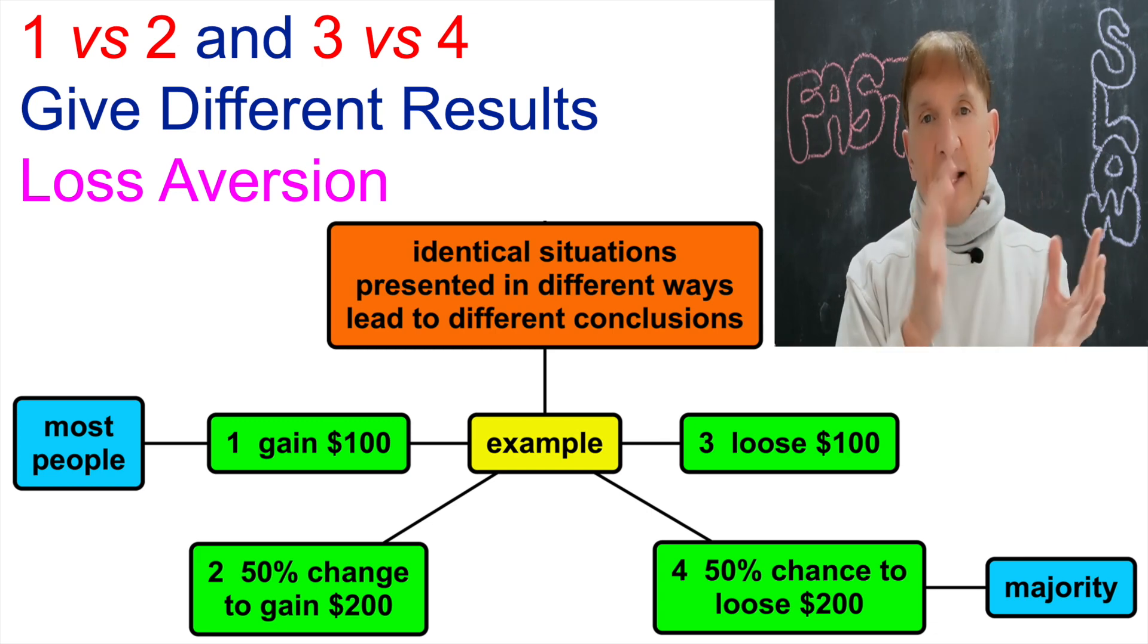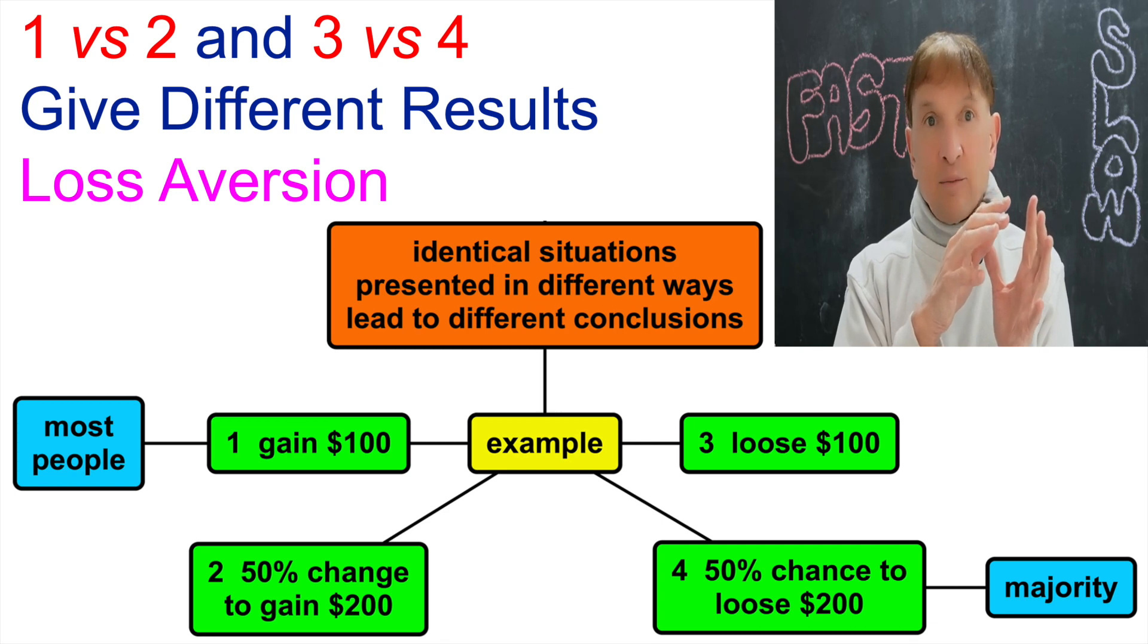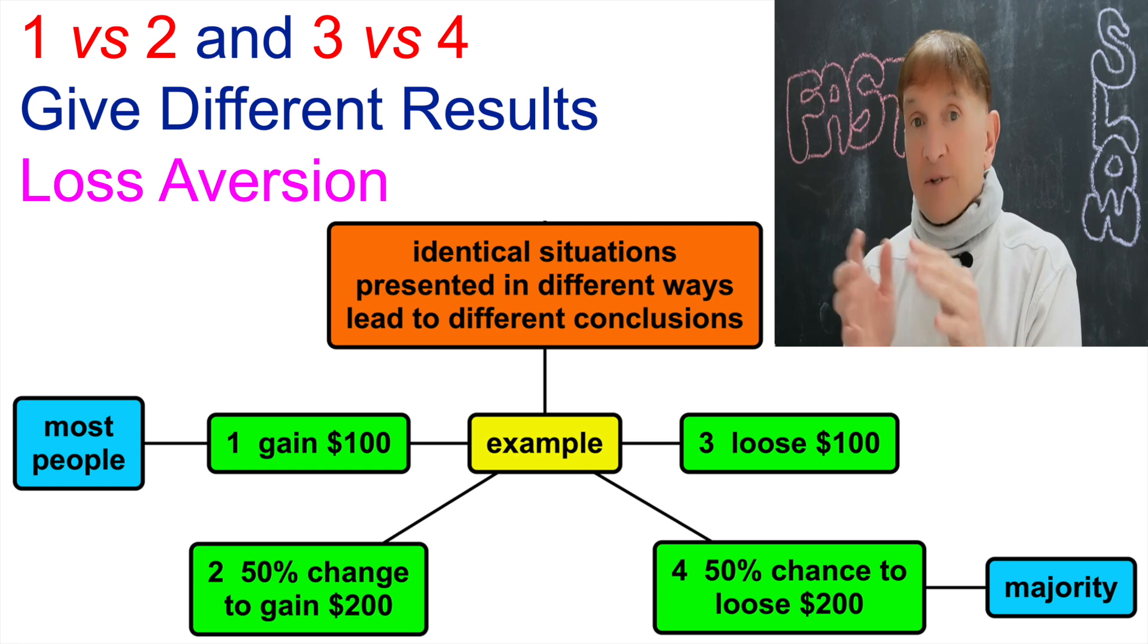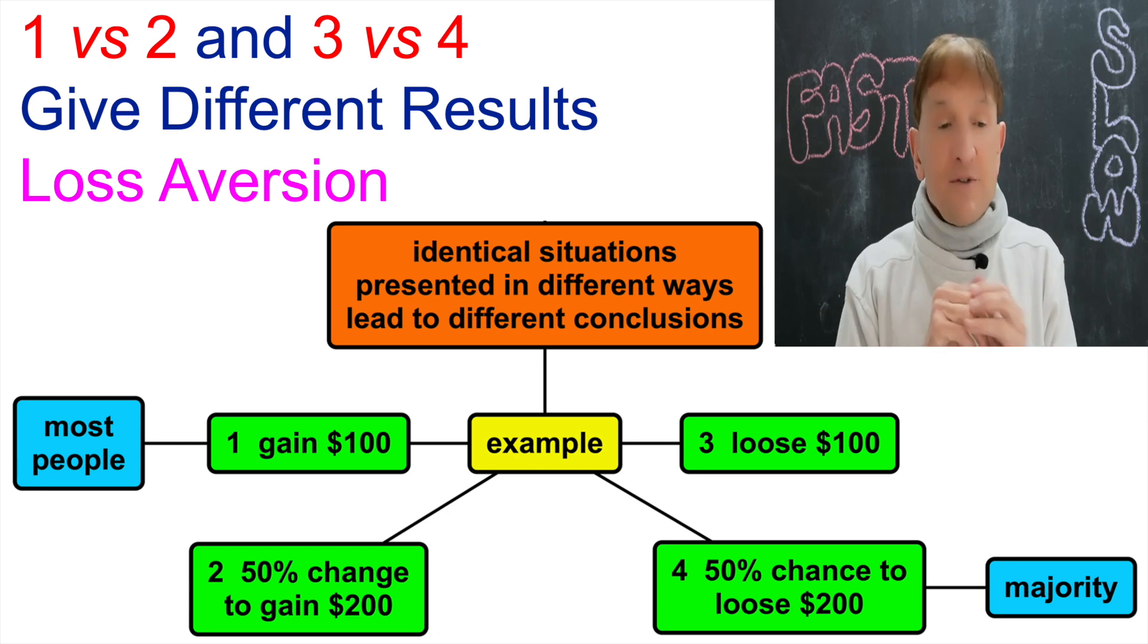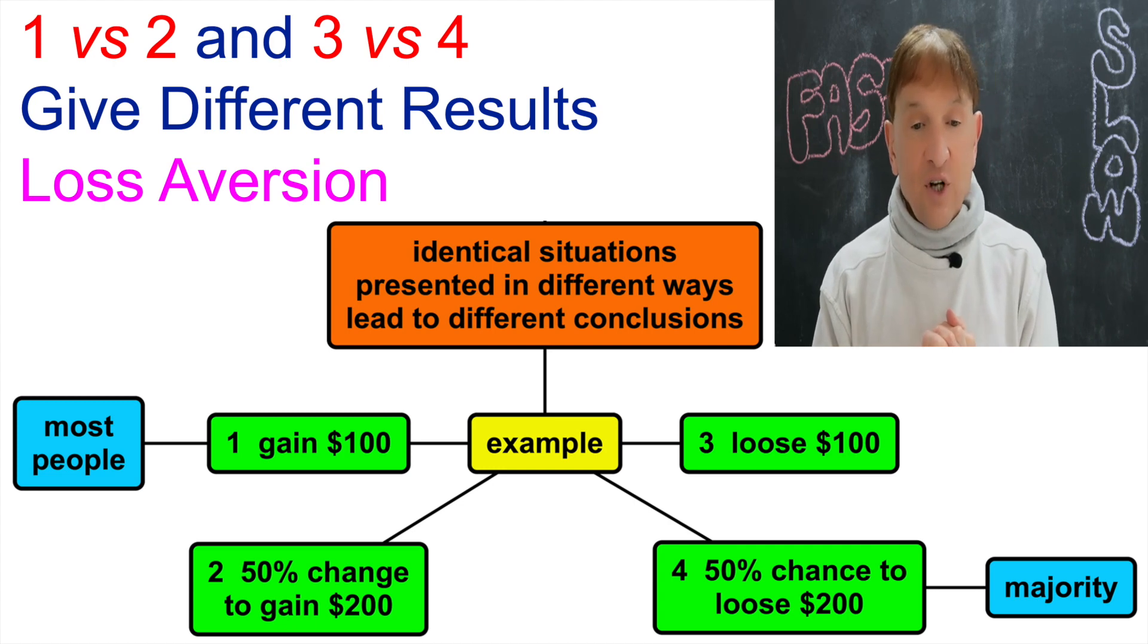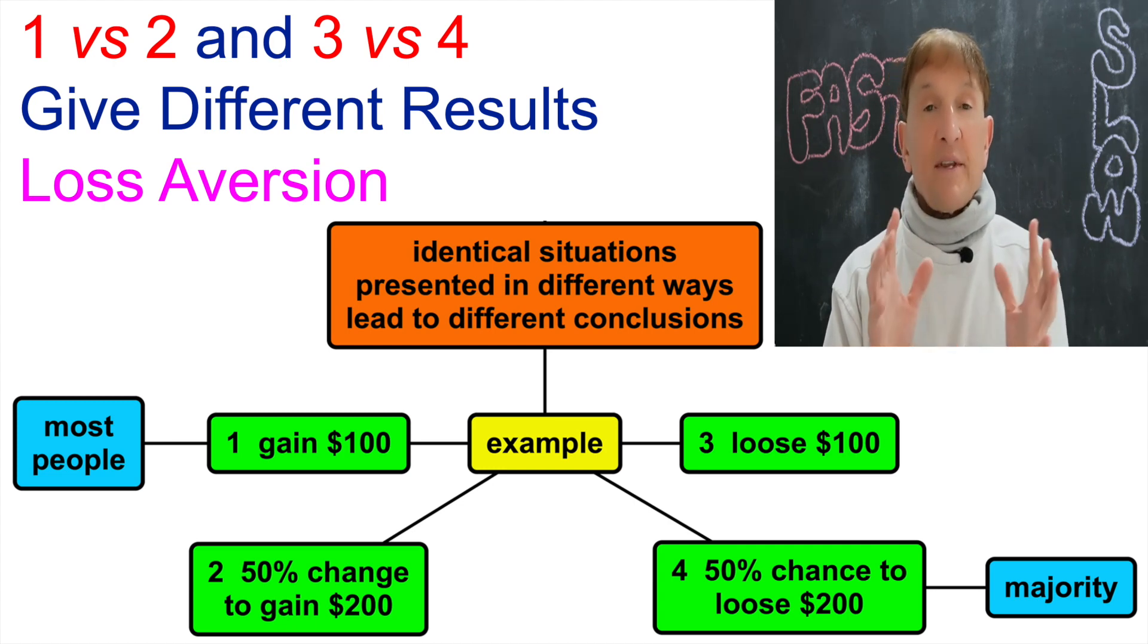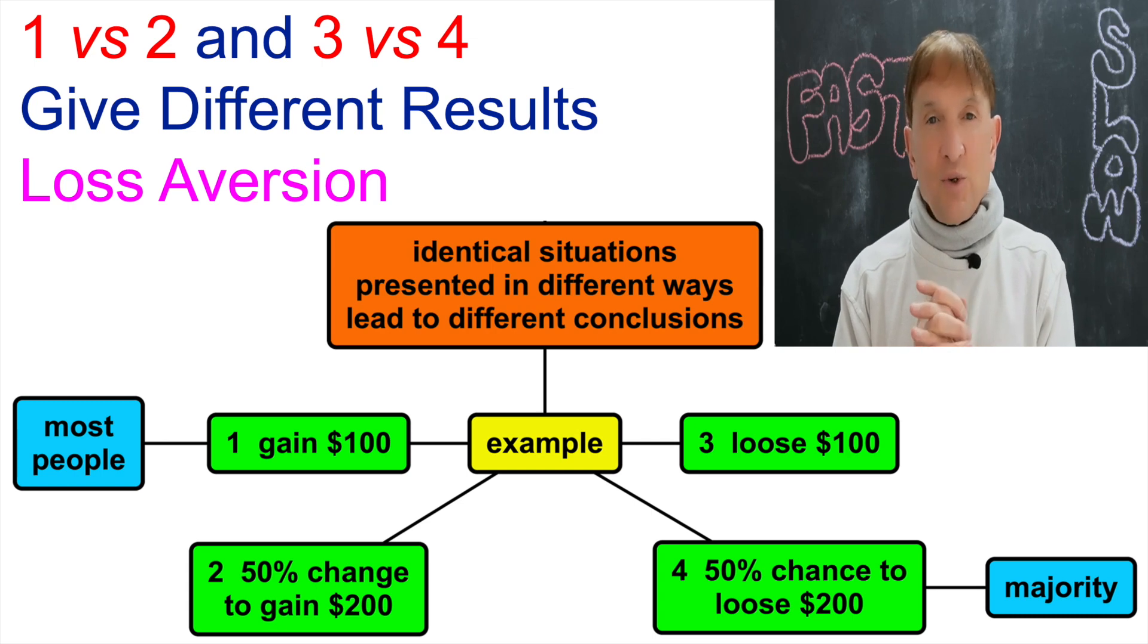Both bets are symmetric. Either $100 gain, possible $200 gain, or $100 loss, possible $200 loss. But the outcome for the two groups is different. In the first group, where we compare the gain versus a 50% chance, most people take the $100 gain. But in the second group, where there's a 50% chance to lose $200, the majority took that chance.